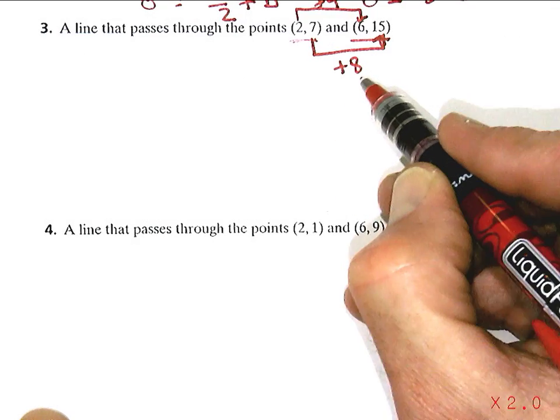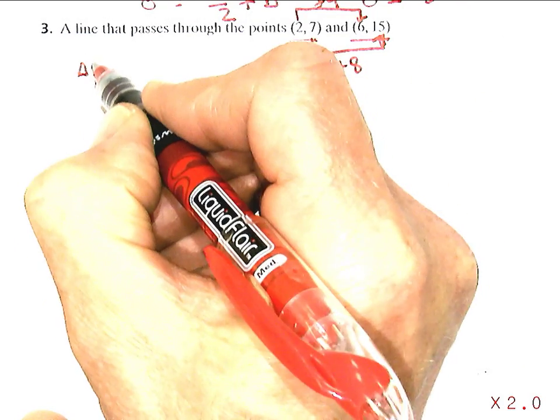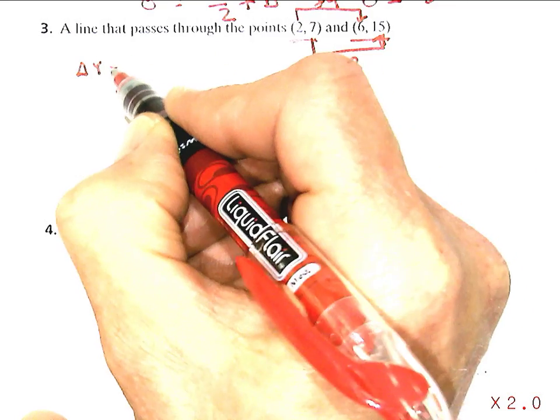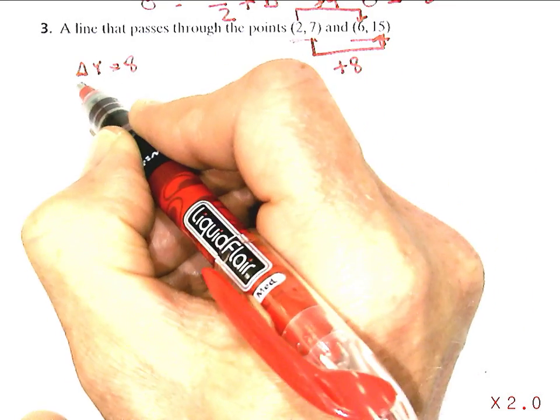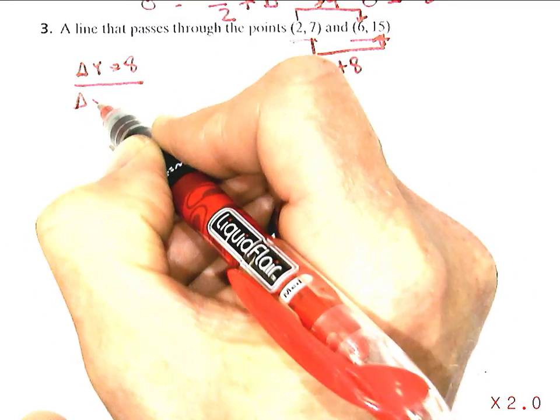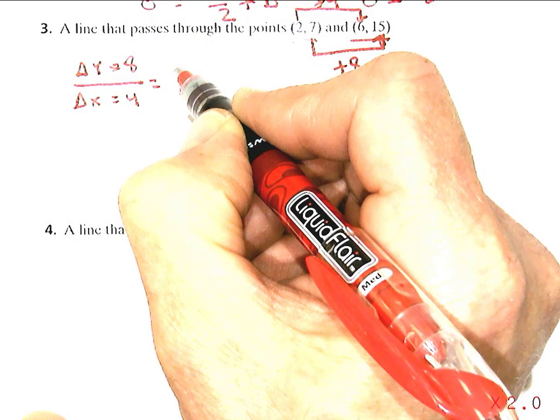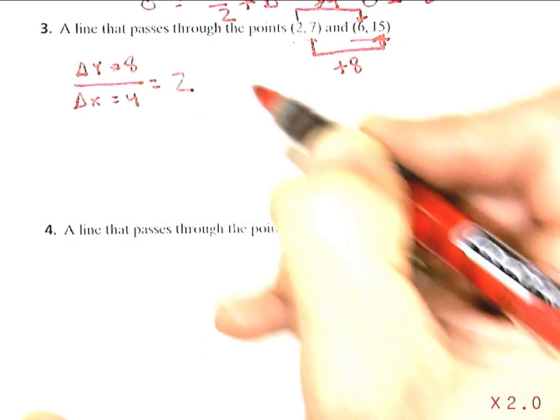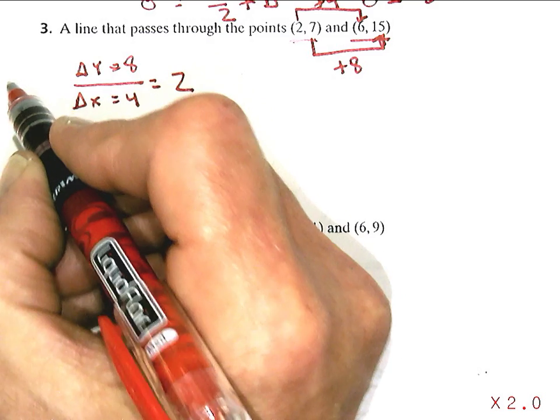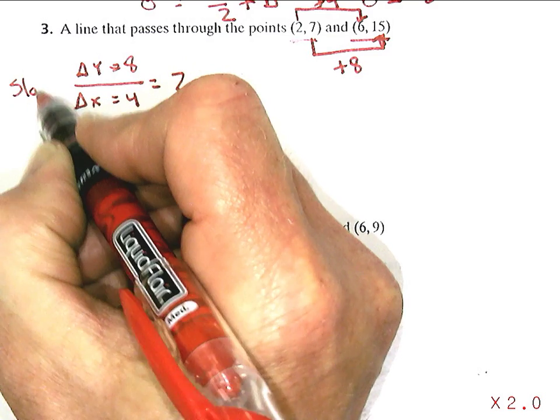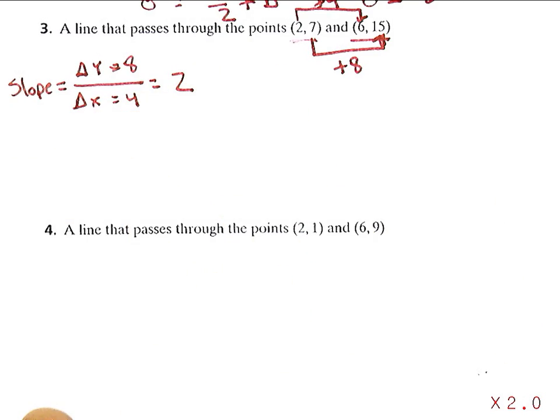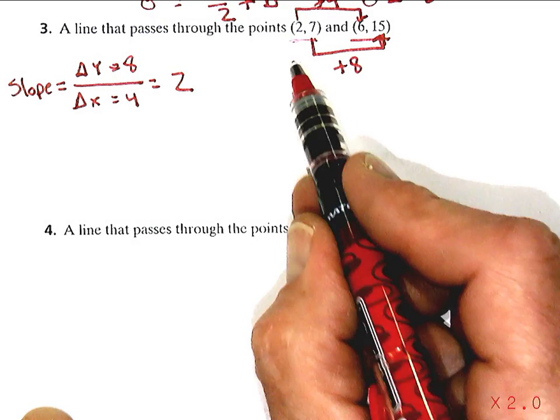And so the change in y is 8, and over the change in x, which is 4, and 8 divided by 4 is 2. So there was the slope, which is what I wanted. Slope equals the change in y over the change in x. And I can do that just by looking at the points.